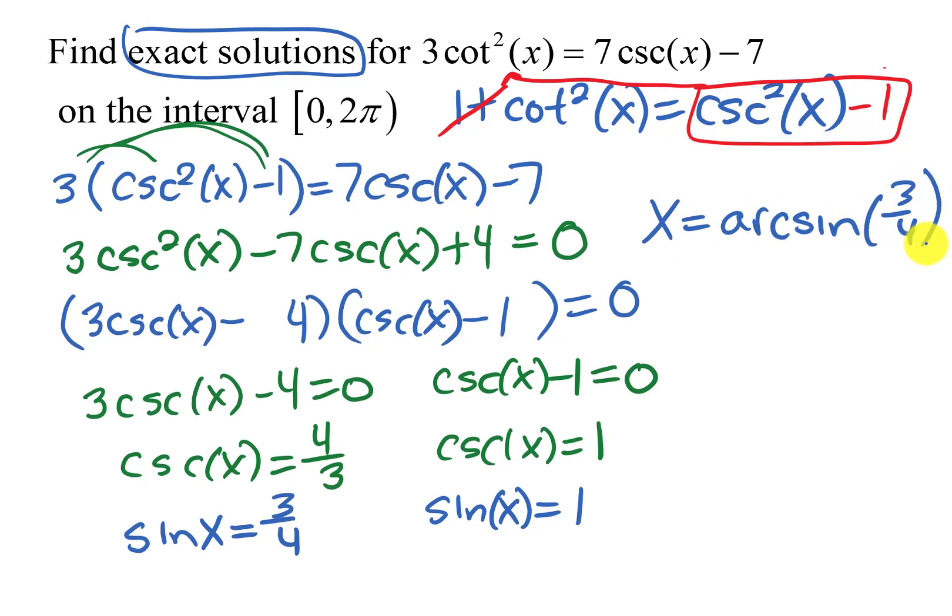Remember, inverse trig functions equal angle, so that equals the angle whose sine is 3 fourths. And we know if we use arc sine that that would give us an angle in quadrant 1 because the sine is positive. And I need a second angle, which would be in quadrant 2 where sine is also positive. They have the same y value.